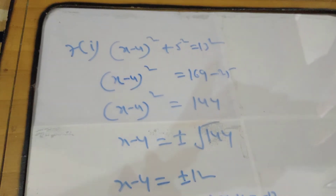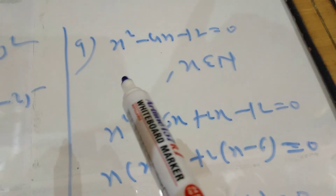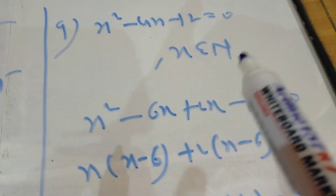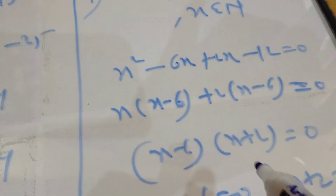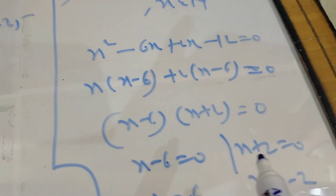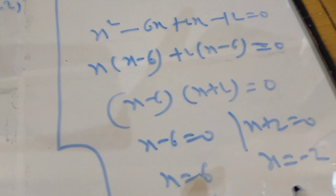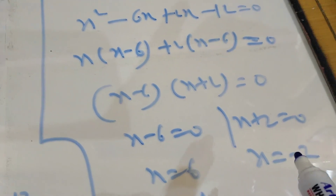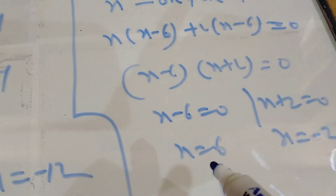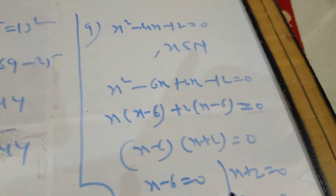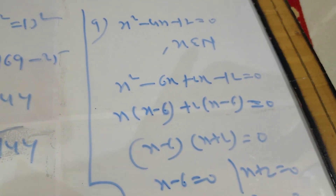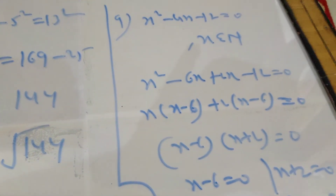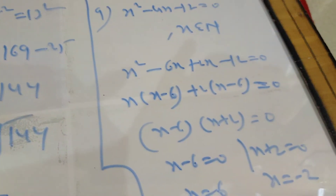I want to discuss one more question: x² − 4x − 12 = 0, where x belongs to natural numbers, meaning our answer must be a natural number only. I factorized it and got two factors. Applying the zero product rule: x − 6 = 0 and x + 2 = 0, giving x = 6 and x = −2. But x = −2 is not a valid answer because it is not a natural number, so our answer is x = 6 only. Conditions like this can also come in problems. Take hints from these questions and do more and more practice. Mark questions you cannot solve in your copy to ask when contact classes are held. Thank you very much.